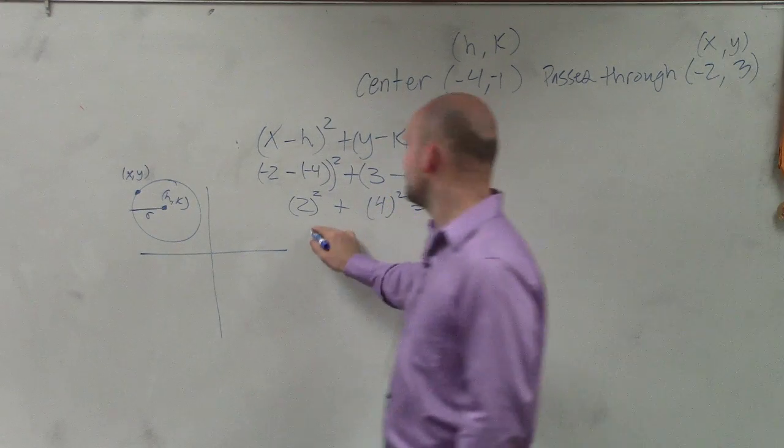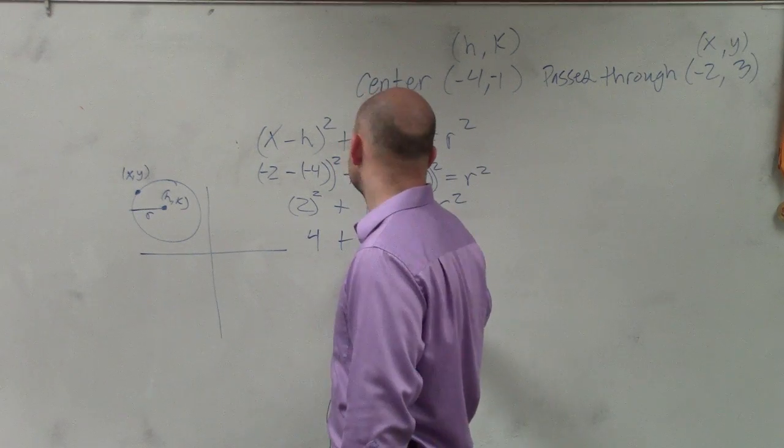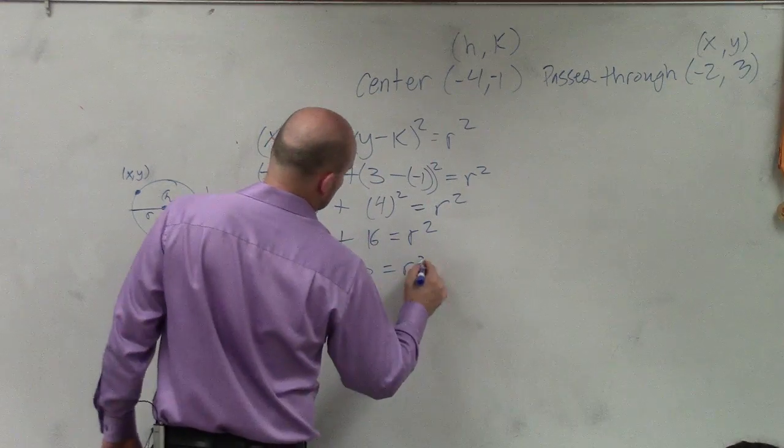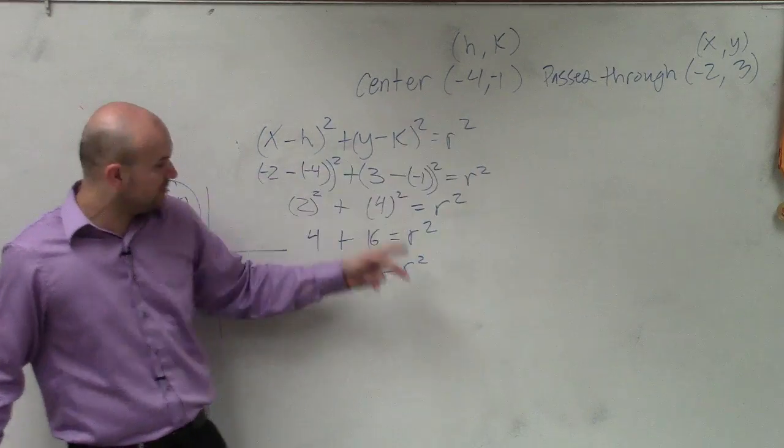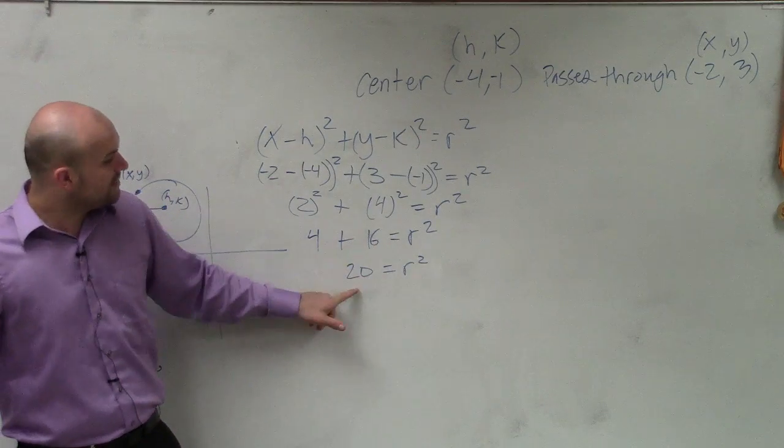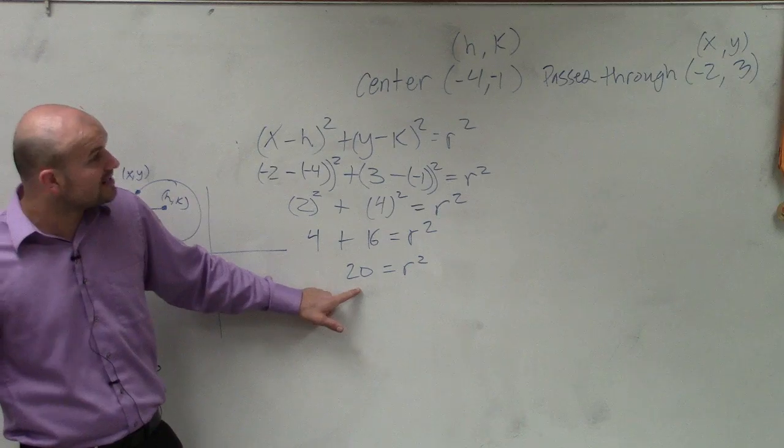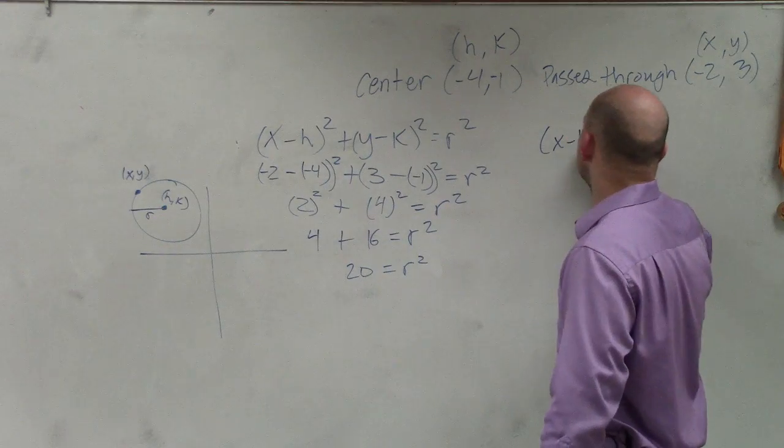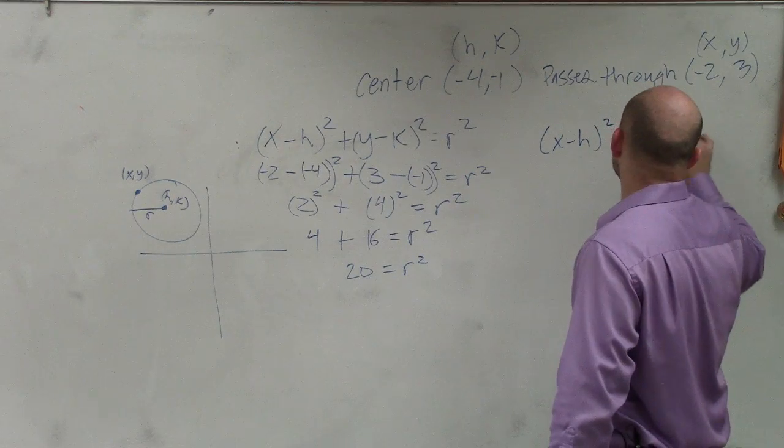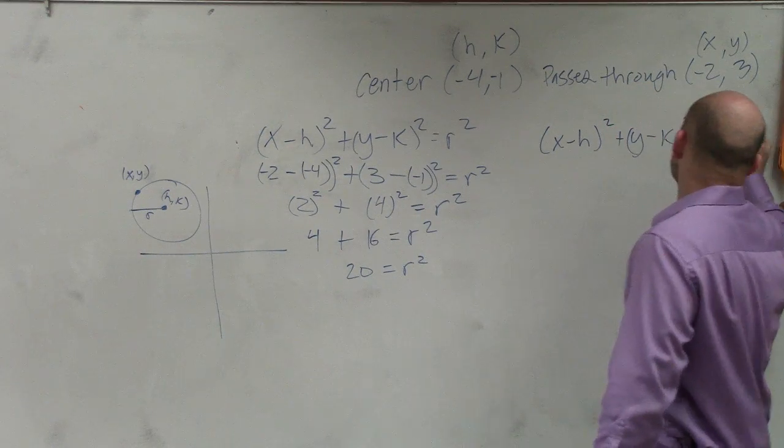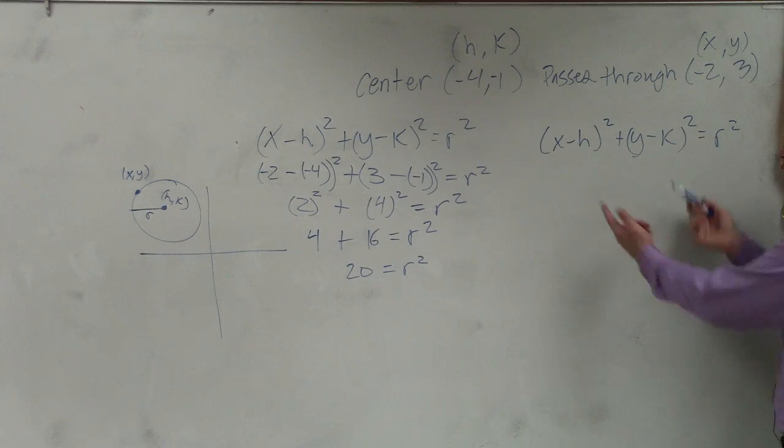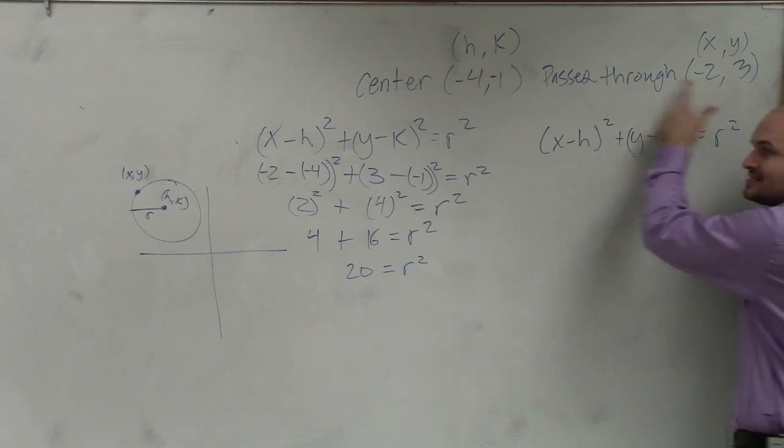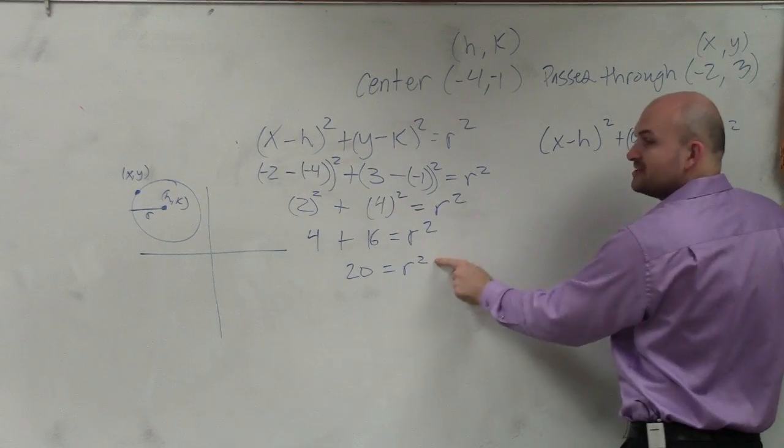Well, 2 squared is 4, plus 4 squared is 16, equals r squared. 20 equals r squared. Now, again, the formula says, what is r squared? We know r squared is 20. And now that we know what r squared is, and we know the center, we can go back to our general form, x minus h squared plus y minus k squared equals r squared. Again, to write the formula, all we care about is what the center and what the radius is. We use this point to plug it into the formula to find r.